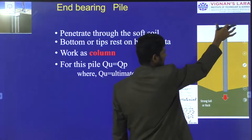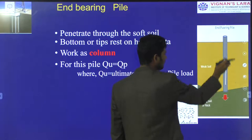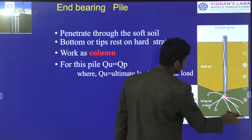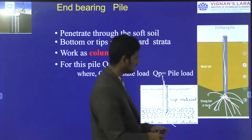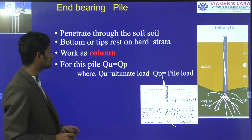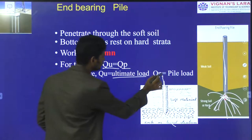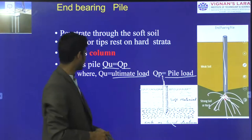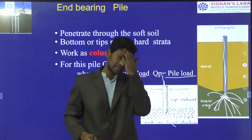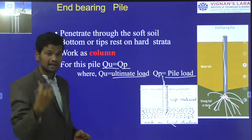Here, this is a structure we are constructing. The load must be transferred from the weak soil to the deeper strata — this is the type of end bearing pile. In this end bearing pile, the load is distributed into the surrounding underground soil mass at the bottom. For this pile, QU equals QP, where QU is the ultimate load carrying capacity and QP is the pile point load carrying capacity.